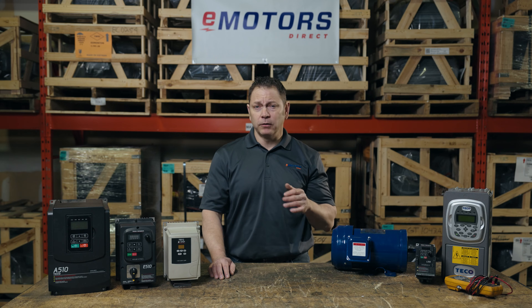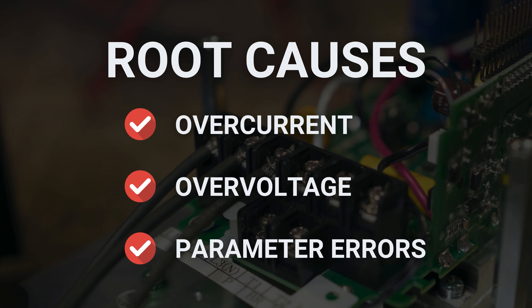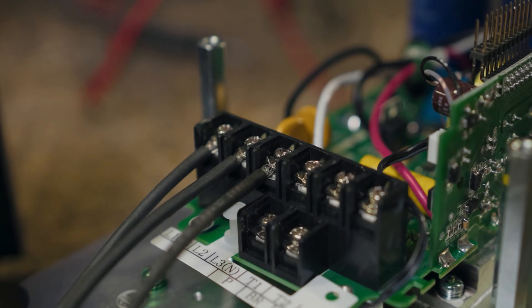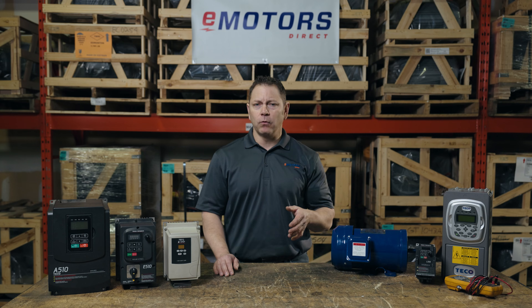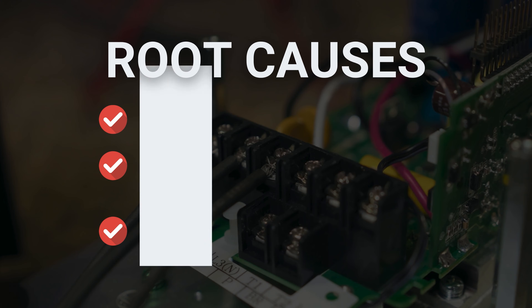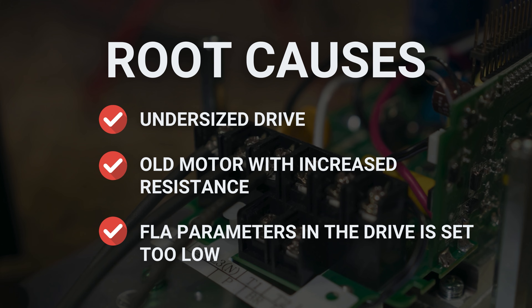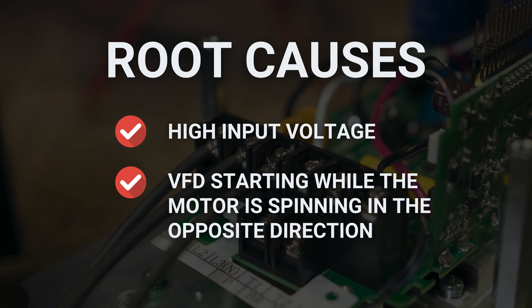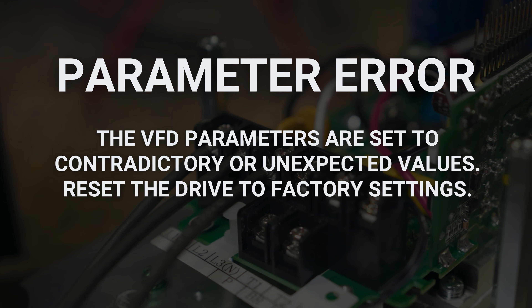Some drives won't start without a motor connected, so keep that in mind. Common nuisance failure fault codes include overcurrent, overvoltage, and parameter error. An overcurrent state is caused by the motor asking for too much current — this might be caused by an undersized drive, an old motor with increased internal resistance, or the motor full load amps parameter being set too low. Overvoltage occurs when the DC bus voltage exceeds its rating, often caused by high input voltage or the VFD starting while the motor is spinning in the opposite direction — common for outdoor fans. A parameter error is usually caused by parameters set to contradictory or unexpected values; reset the drive to factory settings and see if that fixes it.